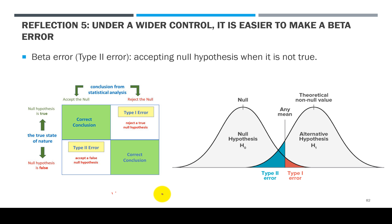So reflection number 5 is that under a wider control, it is easier to make a beta error. So what is a beta error? This is also called type 2 error — you are accepting a false null hypothesis. Alpha or the type 1 error only occurs when you reject something, meaning when you stop a line. When you stop a line doing inspection and it turns out that the process mean did not change, that is your type 1 error, the case of alpha.